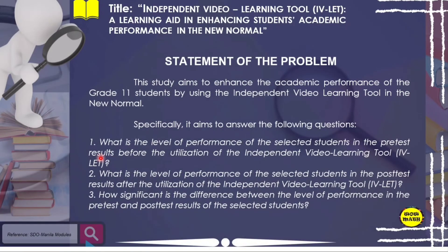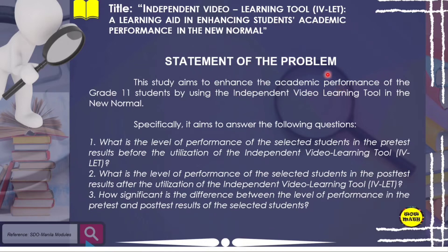For example, the title of the research is 'Independent Video Learning Tool: A Learning Aid in Enhancing Students' Academic Performance in the New Normal.' The first paragraph, or general problem, states: 'This study aims to enhance the academic performance of the Grade 11 students by using the independent video learning tool in the new normal.' We get the general problem directly from the research title — it shows the purpose of the study, which is to use the independent video learning tool to enhance academic performance.